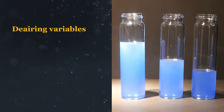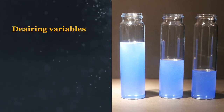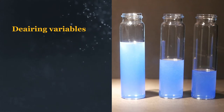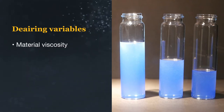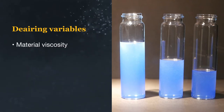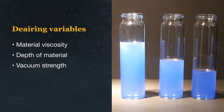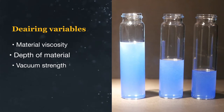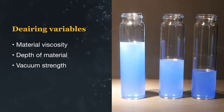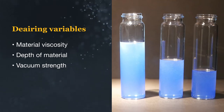The purpose of de-airing is to get dissolved gases and bubbles out of a material prior to curing. The three key variables that impact the speed of this process are the material's viscosity, the depth of material being de-aired, and vacuum strength. The material's viscosity and the depth of the material being de-aired are interdependent, so are typically considered together.